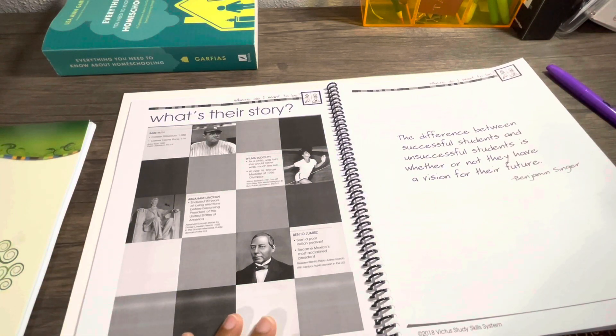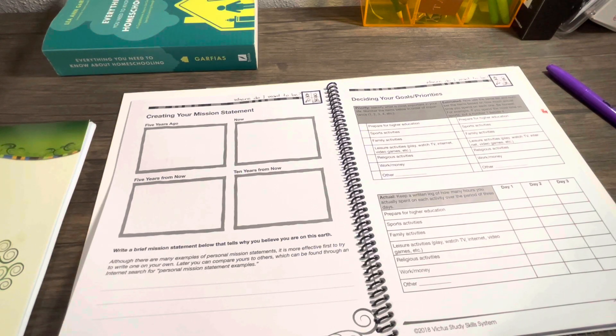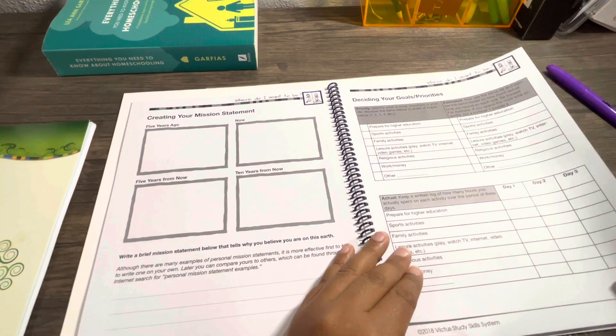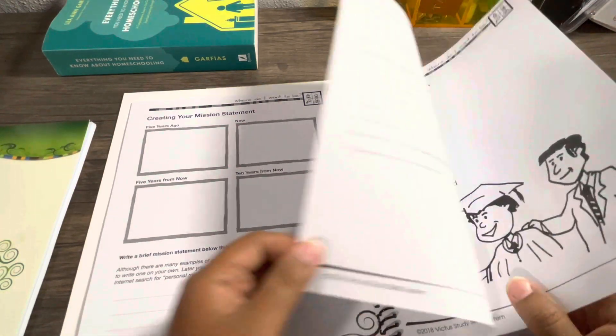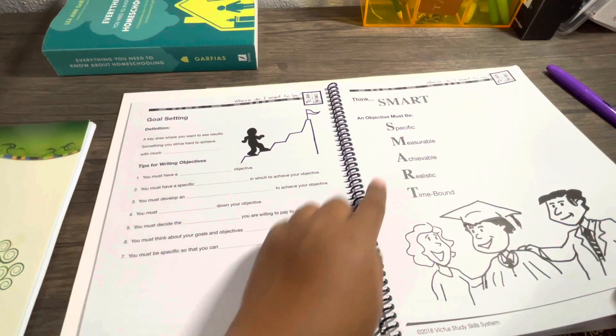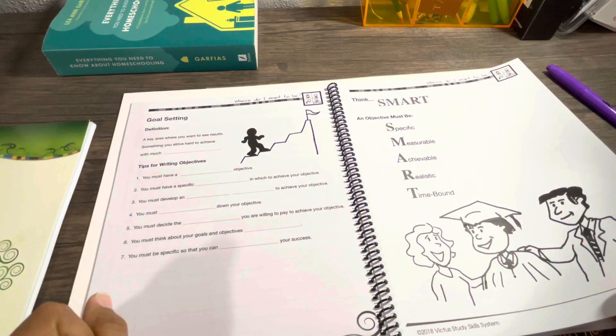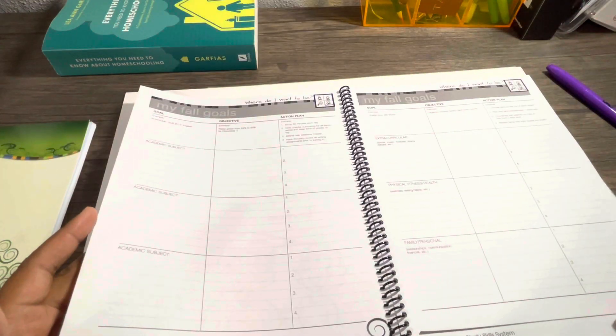Then it goes into What's Their Story, talks about some people, and then creating your mission statement, deciding goals and priorities. I'm not going to show all of the book, but I do want to show some pages. Then it goes over SMART: everybody knows SMART when it comes to making goals - Specific, Measurable, Achievable, Realistic, and Time-bound.